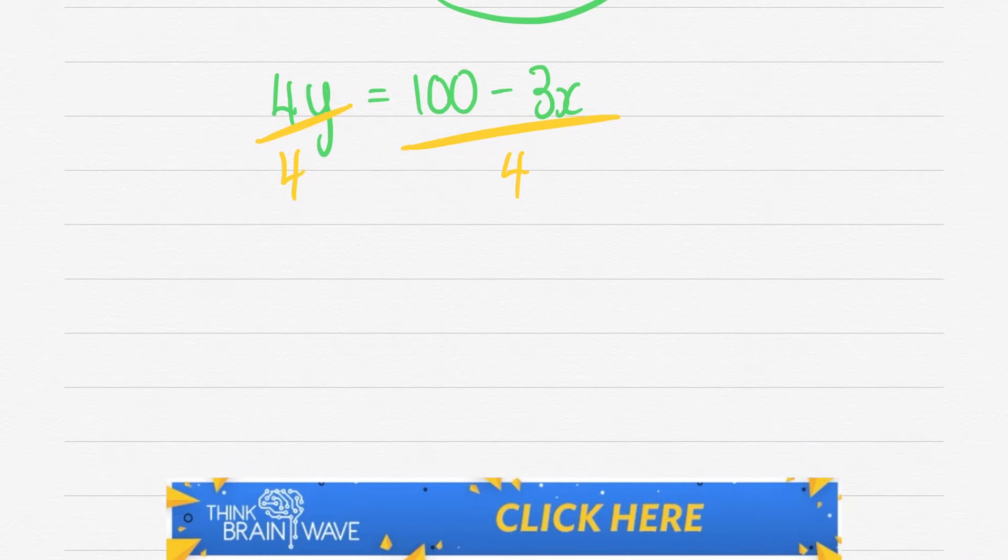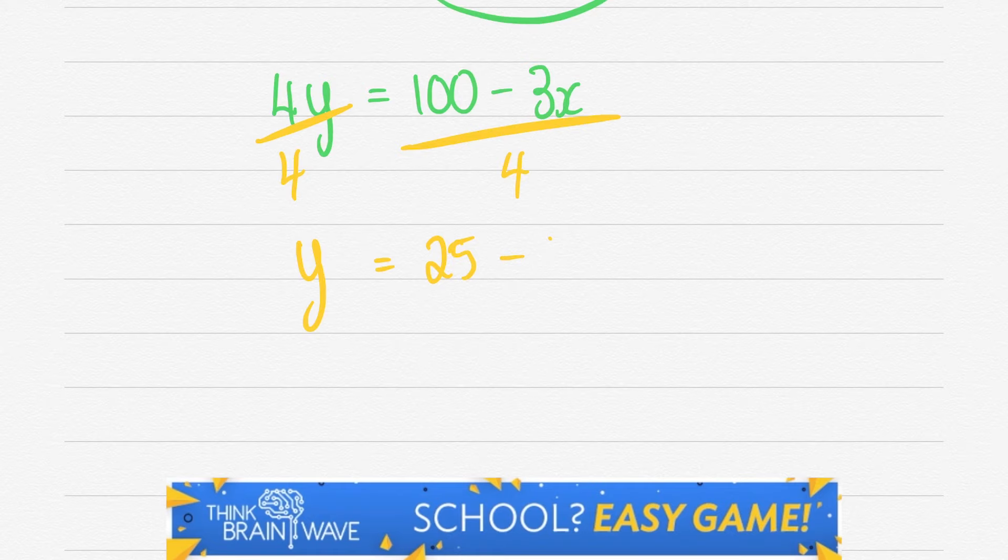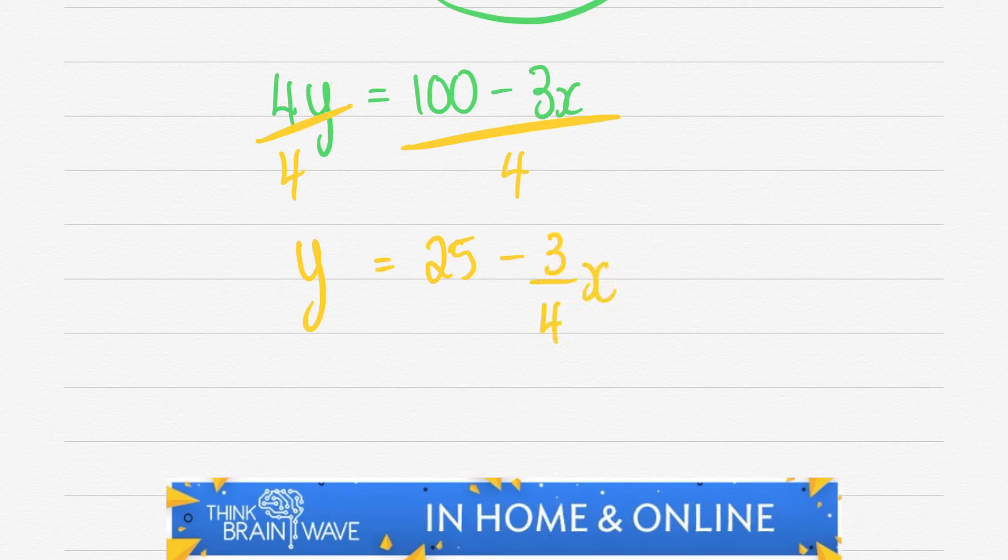Let's divide both sides by 4 so we can get y on its own and we have y = 25 - 3x/4. Right. There we have a basic equation for y.